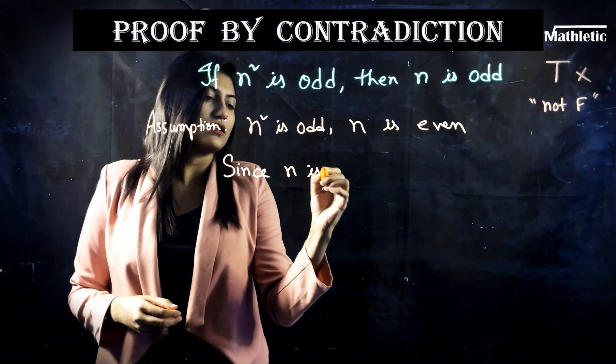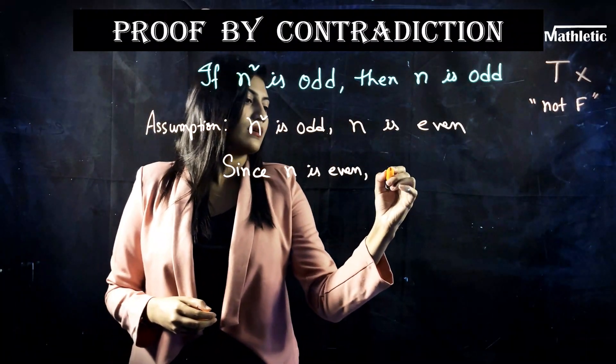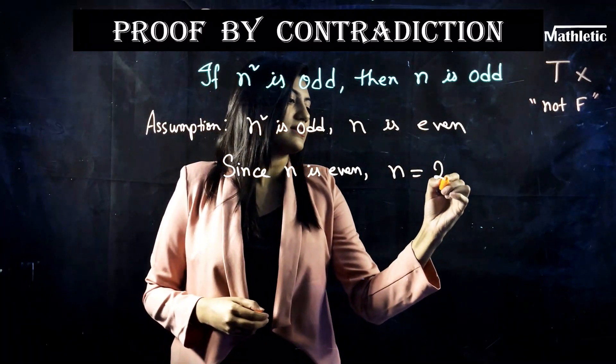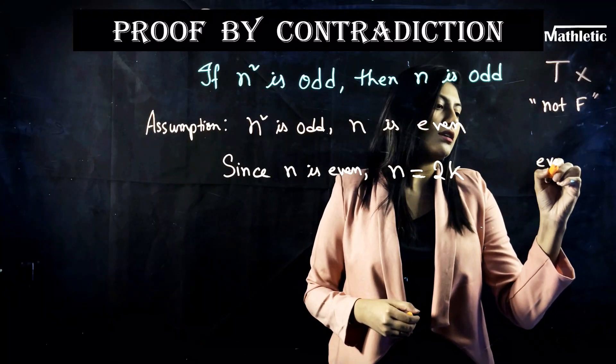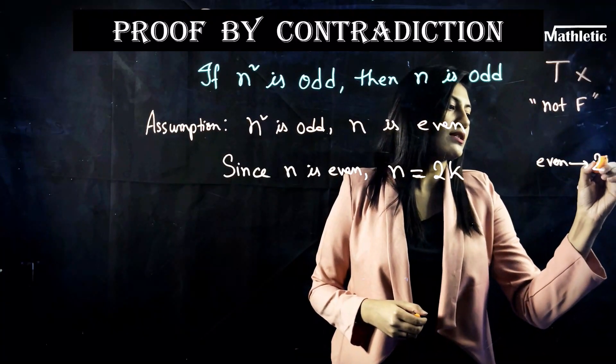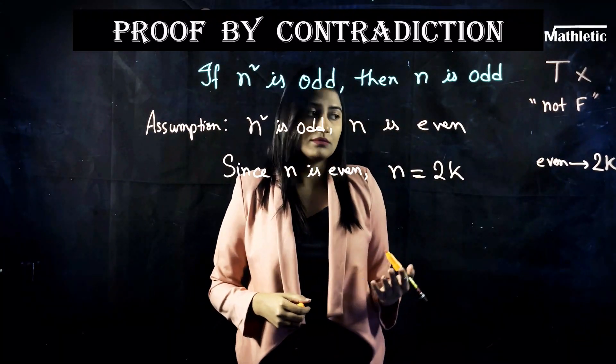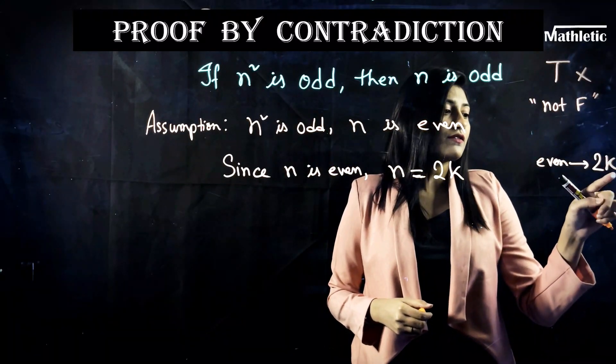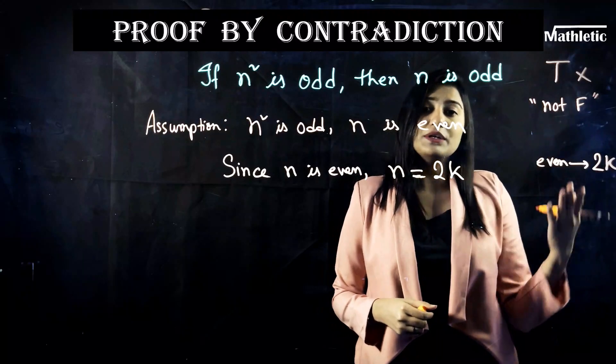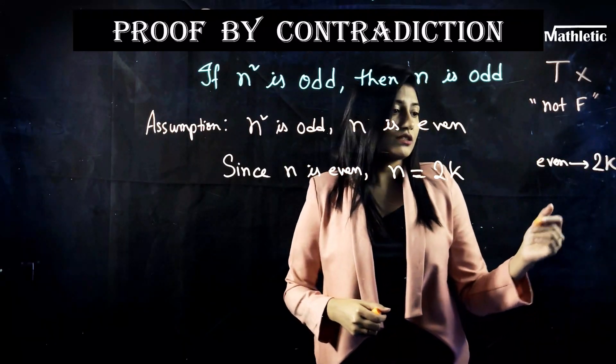Since n is even, we can write n as 2k. Any even integer, you can actually express that as a multiple of 2. 2k, whatever the value of k is, where k is an integer. Whatever the value of k is, 2k is always a multiple of 2, making this thing an even integer.